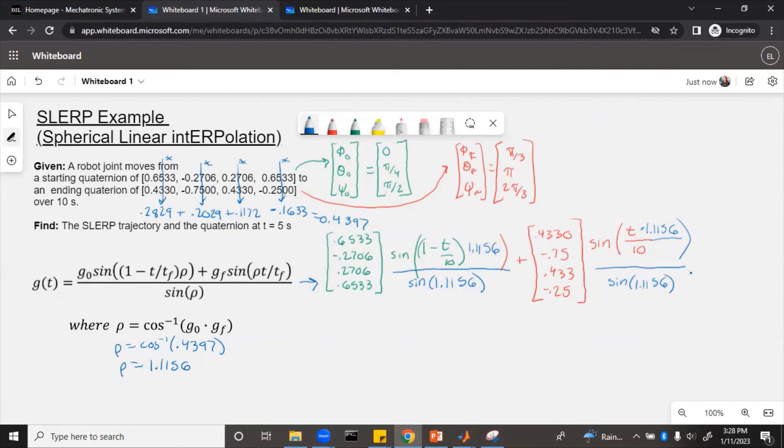Okay, so this formula equals g of t. Now that is really big and complicated, so it can be simplified. If we go through and take that sine of 1.1156 and multiply that by each of the starting and ending quaternions, then we can simplify this to be in a little bit smaller form.